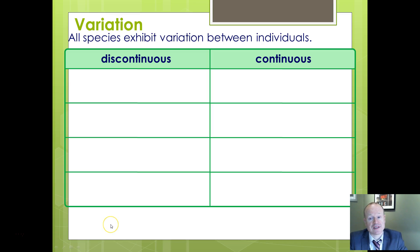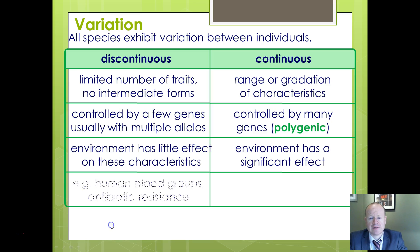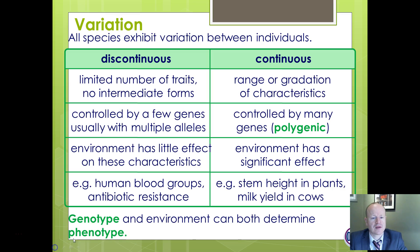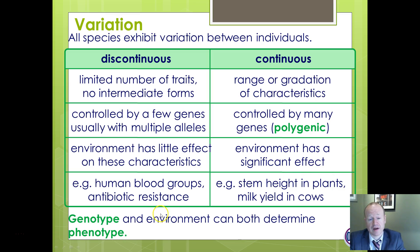To summarise the comparison: discontinuous variation has fewer traits and no intermediates, involves few genes or multiple alleles, and is not influenced by the environment. Continuous variation shows a gradual range of characteristics, is polygenic (many genes), and can be influenced by the environment. Finally, a reminder: genotype refers to the alleles you are born with, while phenotype is how that characteristic is actually expressed — what you observe.